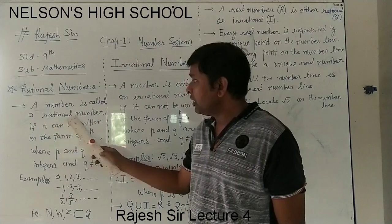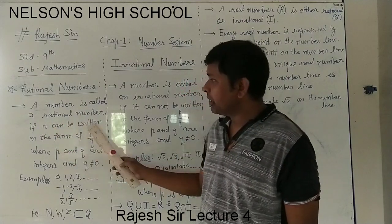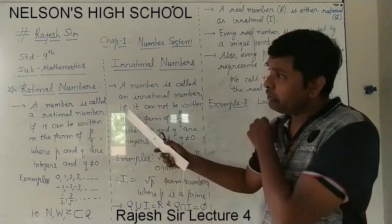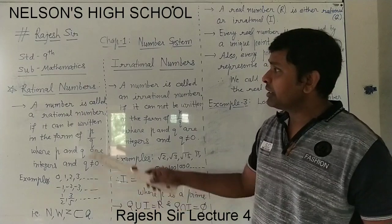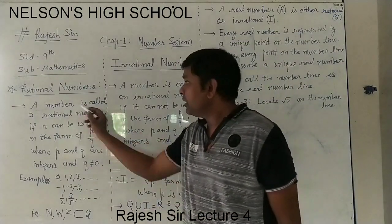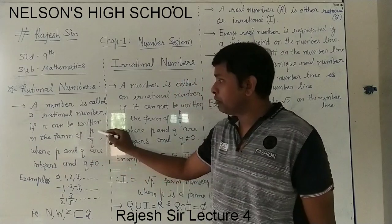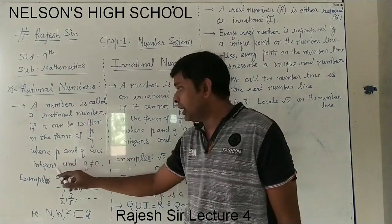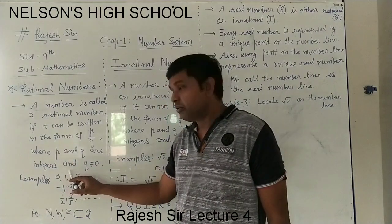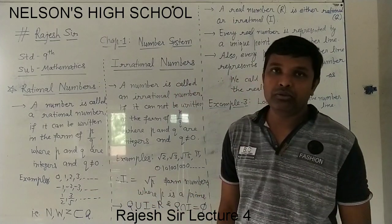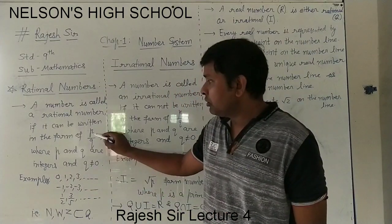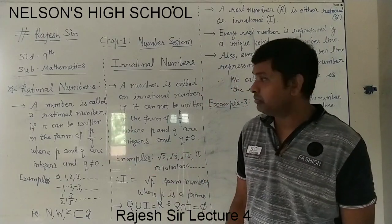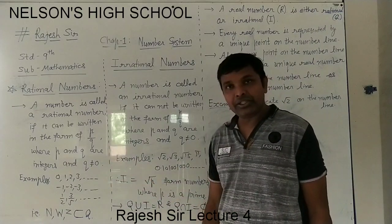A number is called a rational number if it can be written in the form of p upon q, where p and q are integers with the condition that q is not equal to 0. As you know, if q will be 0, this integer upon 0 will be infinite and undefined. So q not equal to 0 is the condition here.